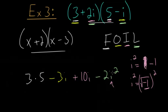So we know that i squared is negative 1, so I'm going to substitute that in after simplifying. So I have 15, or 3 times 5. And then minus 3i plus 10i would be plus 7i. And then I have minus 2 times i squared, but that's negative 1.